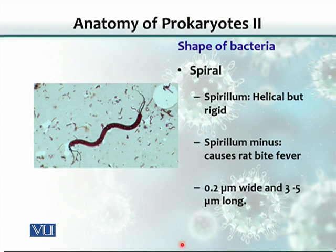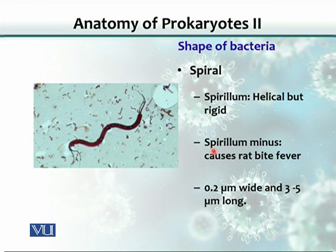This is an example of the spiral subgroup spirillum. As mentioned, it has a helical symmetry — that means it has bends, but the bacterium is structurally rigid. This species, Spirillum minus, causes rat bite fever. These spirochetes and spirals are quite large bacteria.